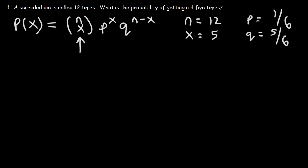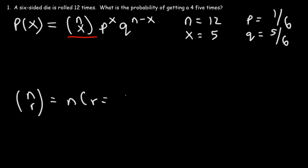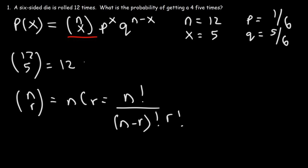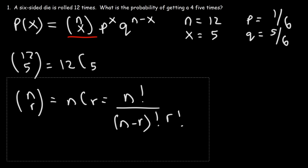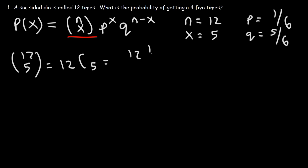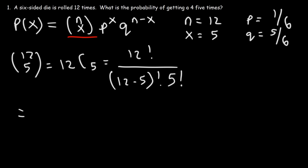Now let's calculate the combination portion of the equation using the combination formula nCr, which equals n factorial divided by (n minus r) factorial times r factorial. So n is 12, x is 5, giving us 12C5. That equals 12 factorial divided by (12 minus 5) factorial times 5 factorial. 12 factorial is 12 times 11 times 10 times 9 all the way to 1, times 8, times 7 factorial.